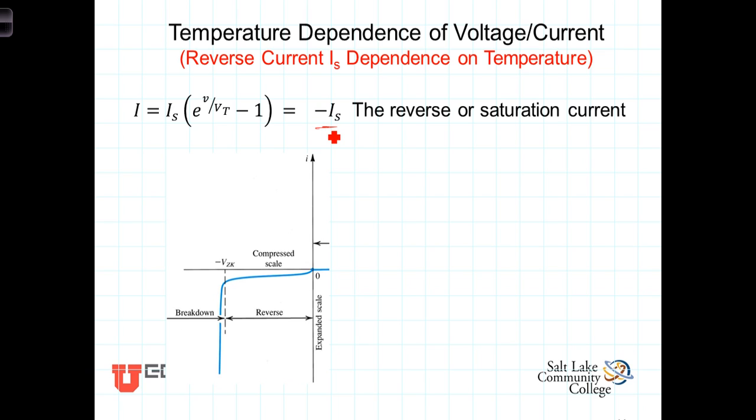But it turns out that I sub S is not a great predictor for the current that you will actually experience flowing in the reverse bias diode. In reality, diodes operating in the reverse bias, the currents in those are generally larger than I sub S.